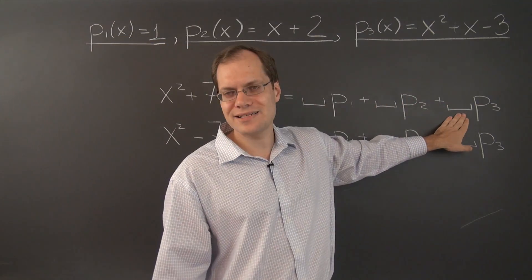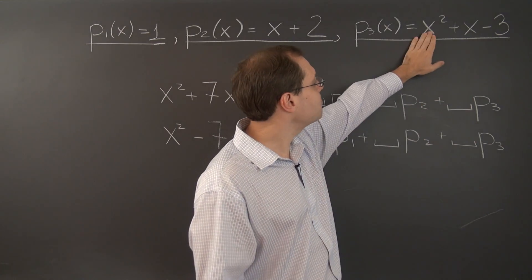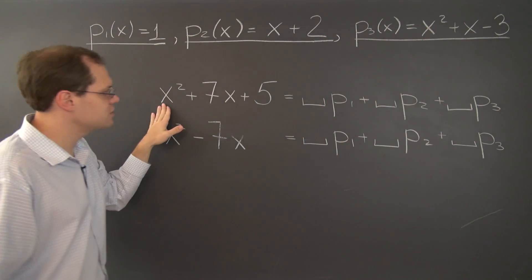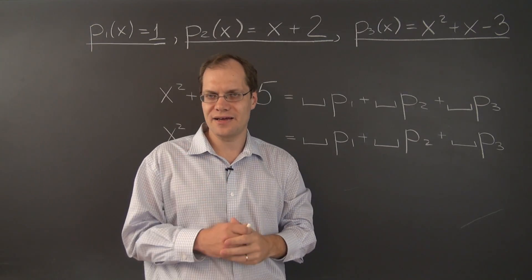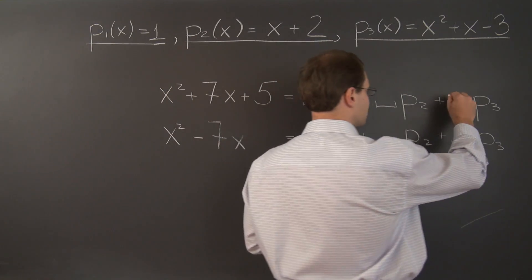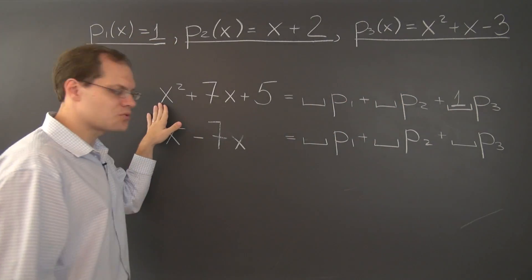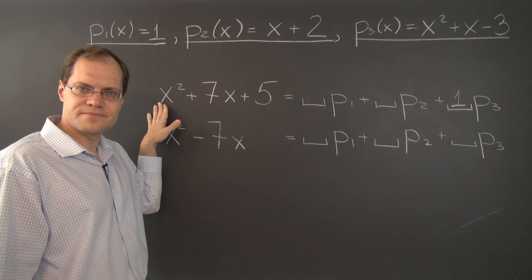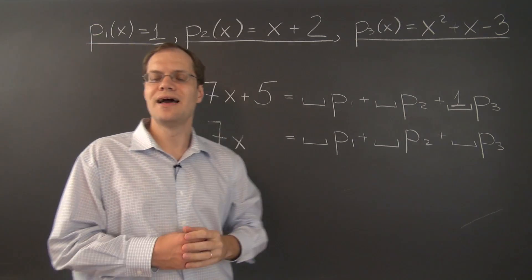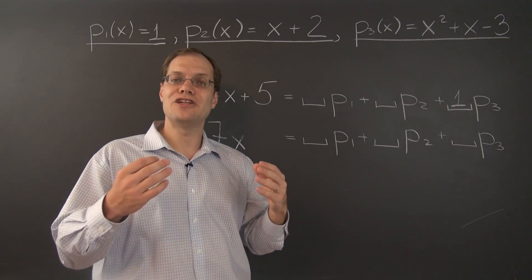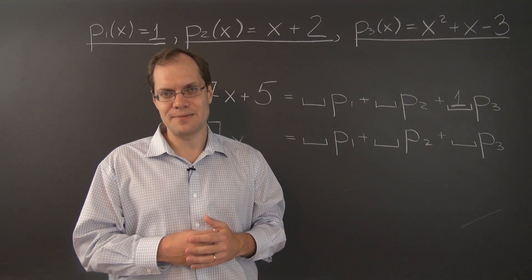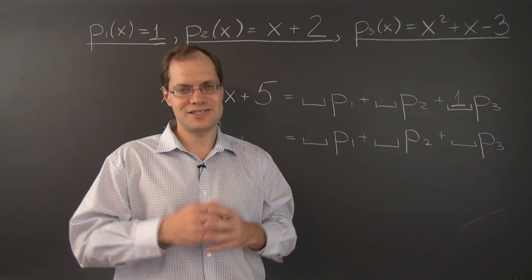So we're looking at the last coefficient. And by matching the x-squared term, we realize that we must take 1 of P3. Because that is the only way to get the x-squared coefficient right. So that part of the task has been accomplished. And it cannot be screwed up by any of the subsequent steps. So we're off to a great start.